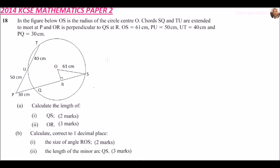At R, OS equals 61 cm, PU equals 50 cm, UT equals 40 cm, and PQ equals 30 cm. So we have our figure here. Part A: calculate the length of QS. So how do we get the length of QS?